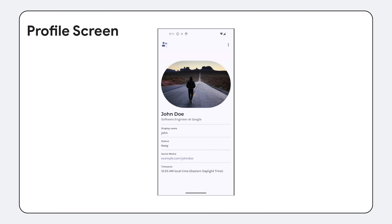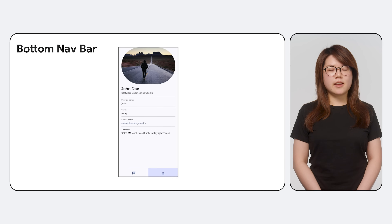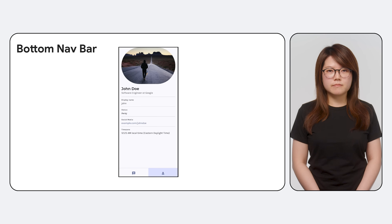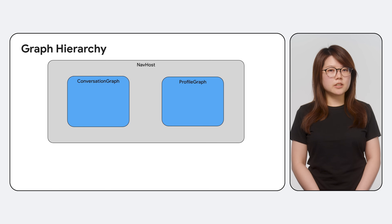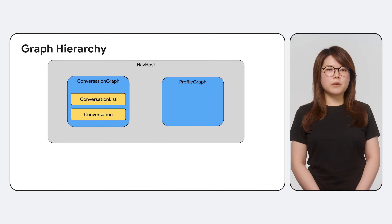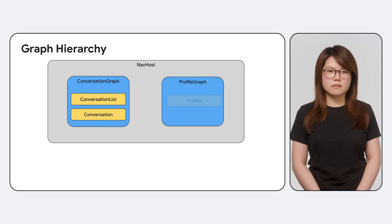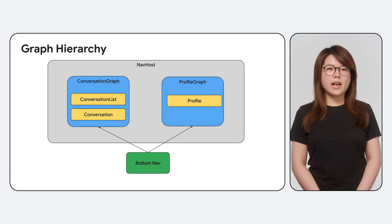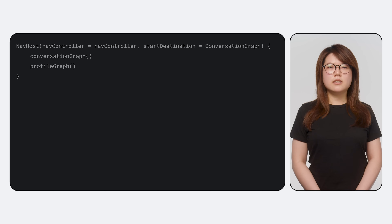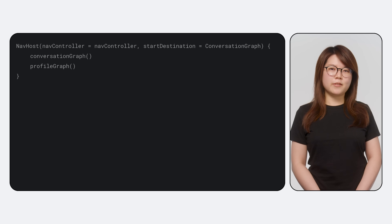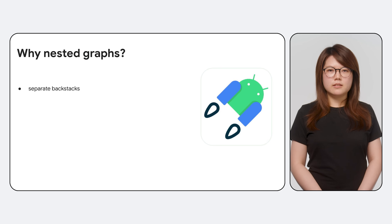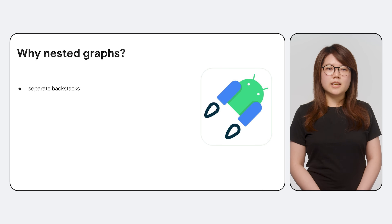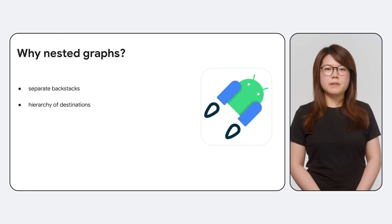Next, let's say you want to expand your app by adding a profile screen to display the information of the logged in user, and you also want to support navigation between conversations and profile with a bottom navbar. To start, let's restructure our current graph. Within navhost, we'll create two nested graphs — one for the conversation-related screens and one for profile. The conversation graph will host the conversation list and conversation destinations. The profile graph will host the profile destination. Then we'll add a bottom navbar containing two tabs: the first tab navigates to conversation graph, and the second navigates to profile graph. Nested graphs allow for separate backstacks within each tab, which makes it easier to manage saving and restoring states, and they create a hierarchy between your destinations which facilitates the bottom navbar implementation.